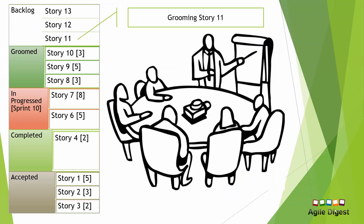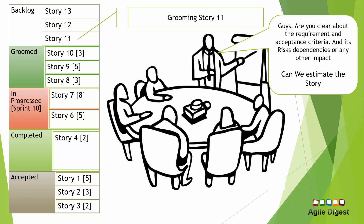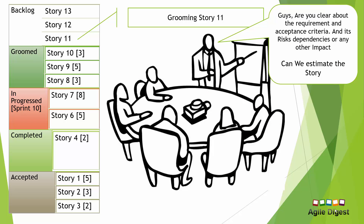After thinking through all of this, they reach a point where they can actually estimate the story. Before estimating, the product owner asks whether everyone is okay with all the requirements, all the discussion, and whether the acceptance criteria are clear. If everyone is on the same page, the product owner asks each individual team member for their estimation.